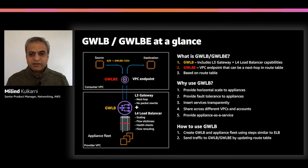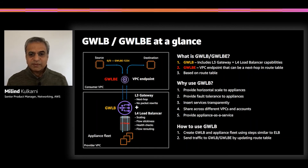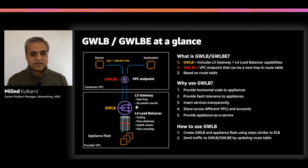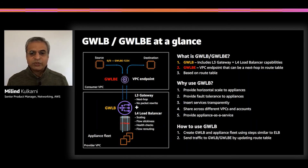By using Gateway Load Balancer you get five benefits: horizontal scale to appliances, fault tolerance to appliances, transparent insertion of services due to layer three encapsulation, the ability to share your appliance fleet across VPCs and across accounts, and providers or internal teams can offer appliance-as-a-service to another VPC — enabling a clear separation of service provider and service consumer. You can send traffic to Gateway Load Balancer using simple route table updates, setting the Gateway Load Balancer endpoint as your default next hop.